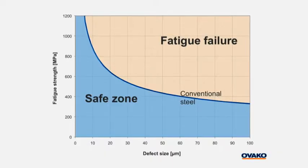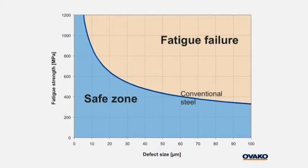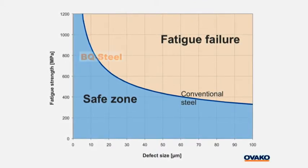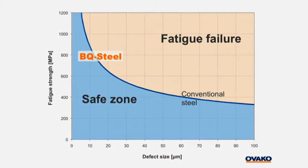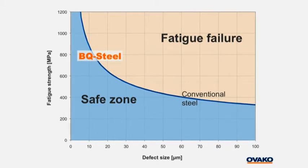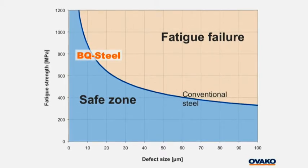In a previous presentation, the fatigue strength versus defect size graph was presented and discussed. This graph shows that the fatigue strength of conventional steel is significantly affected by the presence of defects. BQ steel has significantly smaller inclusion size distribution compared to conventional steel. At this part of the curve, the slope is much steeper, which means that the gain in fatigue strength is increased dramatically.